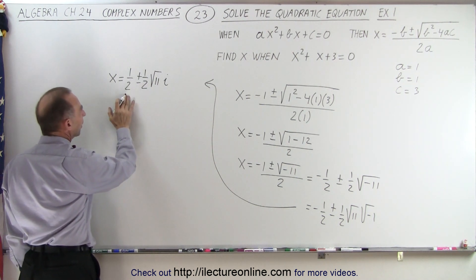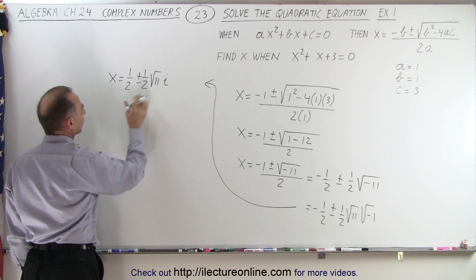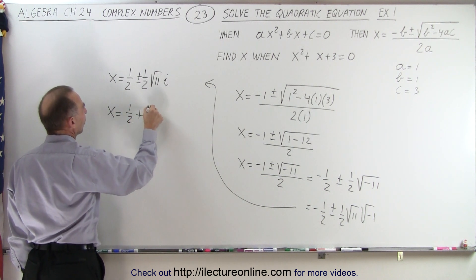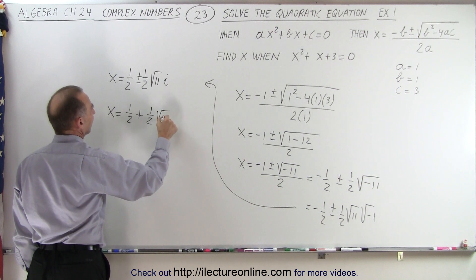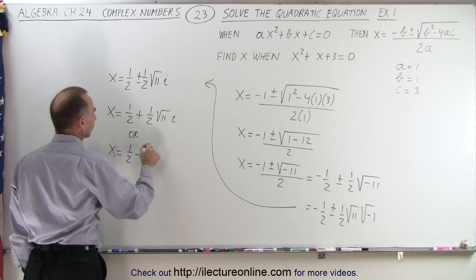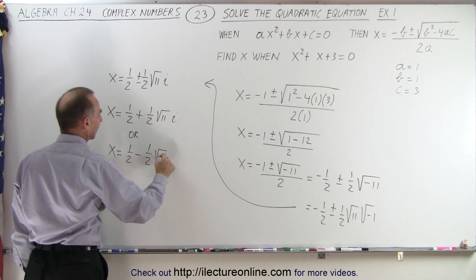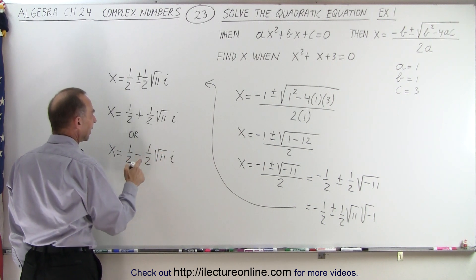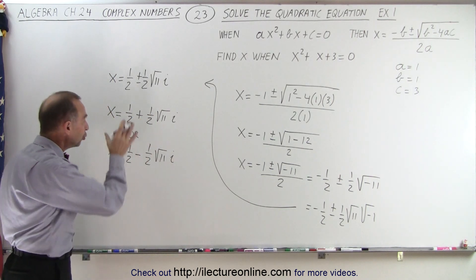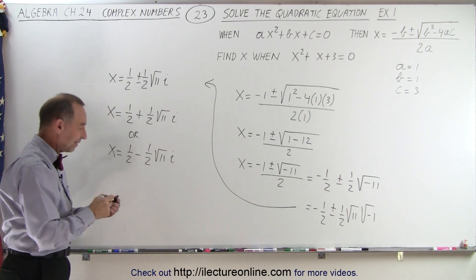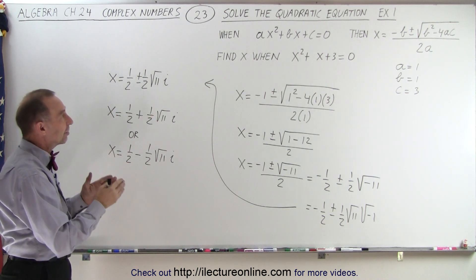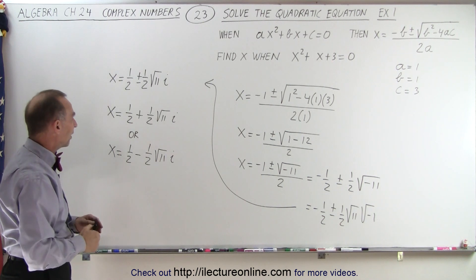Notice I have a real part and an imaginary part. So essentially, x equals negative one-half plus one-half times the square root of 11 times i, or x equals negative one-half minus one-half times the square root of 11 times i. In either case, I have a real part and an imaginary part — so I have two complex numbers as the answer to that particular question: find the value of x that makes the left side equal to the right side.